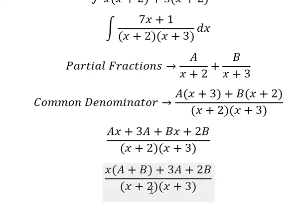Now, we need to compare coefficients. About 7x, we have x. That means 7 equals to A plus B. About the number, we have number 1. So 3A plus 2B equals to 1.